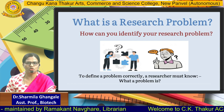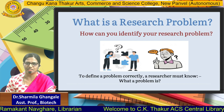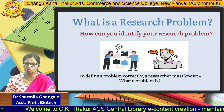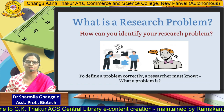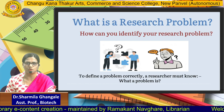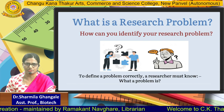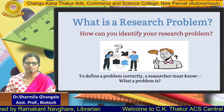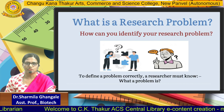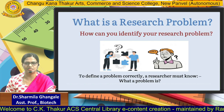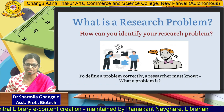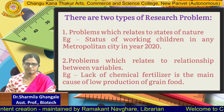How can you identify your research problem? To define a problem correctly, a researcher must know what the problem is — then and only then can the researcher find out the solution. It is the most important step in the research process to identify the problem and see what the solution is. While identifying the problem, there are certain things to keep in mind.